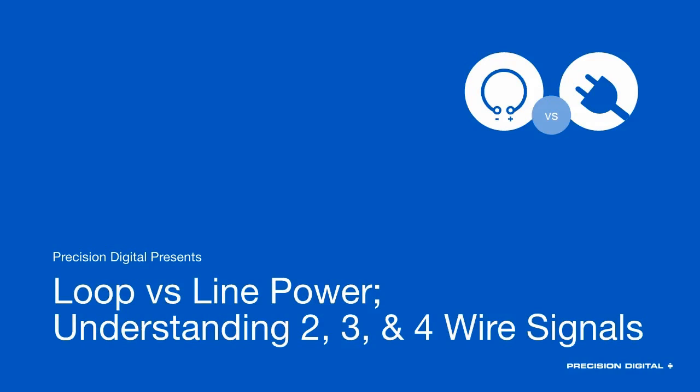Welcome everyone to the Precision Digital webinar titled 'Loop versus Line Power: Understanding Two, Three, and Four Wire Signals.' This is the third webinar in a series of three about 4 to 20 milliamp process signals, designed as a basic course covering fundamentals for those who deal with 4 to 20 milliamp signals and connections regularly but are not full-fledged electrical engineers. If you missed webinar one or two, you can view them at www.predig.com/webinars.